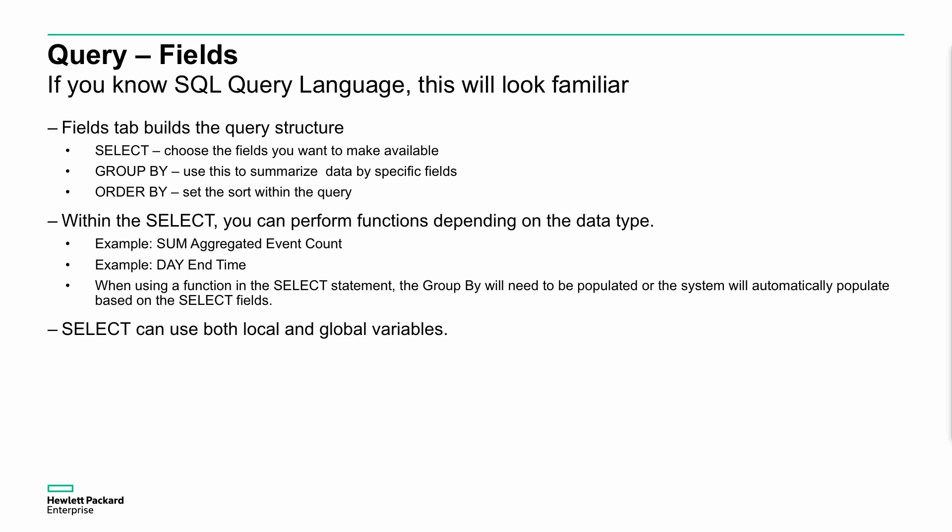If you know SQL, this will look very familiar — the mechanisms, the language, the process. In the fields tab when creating a query, we use a SELECT statement similar to SQL. We group by a particular set of data to summarize it, and order it for sequencing. Within SELECT, you might do a sum of aggregated event count or extract the day from a timestamp. You can also use variables as part of that SELECT process.